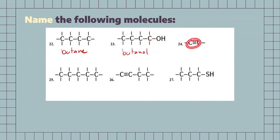Next one, we have our triple bonded carbon there, so it's going to be an alkyne. The proper name for this one would be ethyne. Next, we have 1, 2, 3, 4, 5 carbons, and since they're all fully saturated with hydrogens, we're just going to say it's pentane.